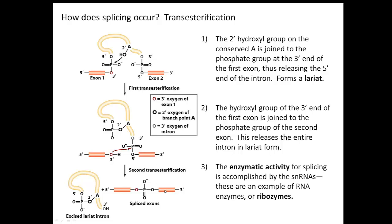Something pretty surprising is that the enzymatic activity for this reaction is actually done by the RNAs themselves. The snRNAs are called ribozymes — they are actually acting as enzymes in this case. This was the very first time it was discovered that RNAs can act as enzymes.